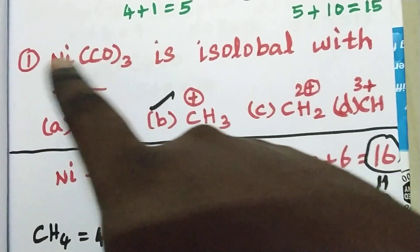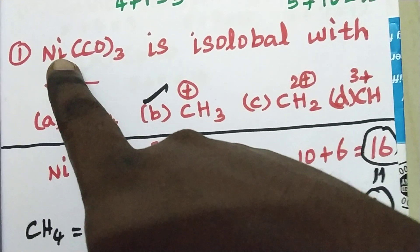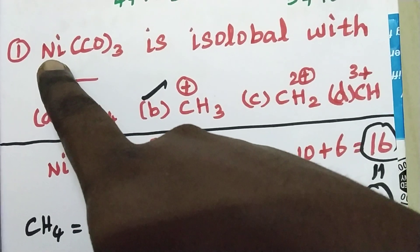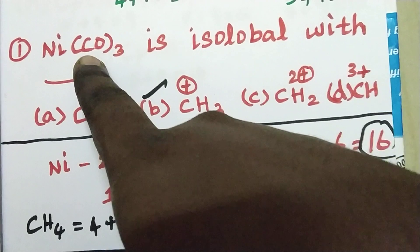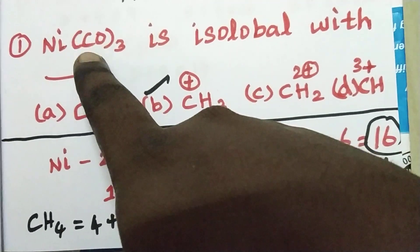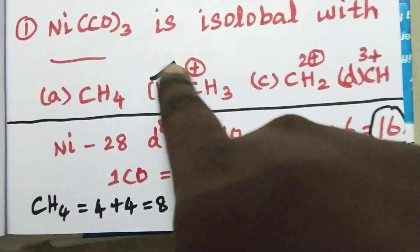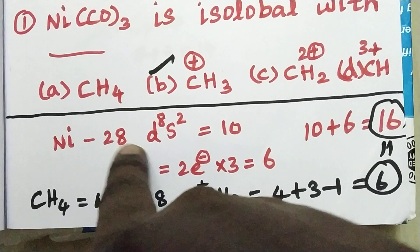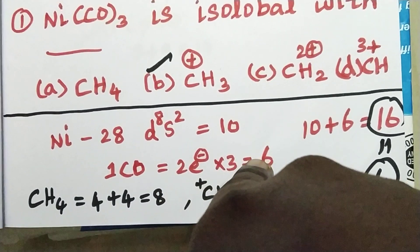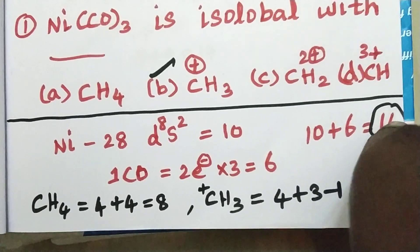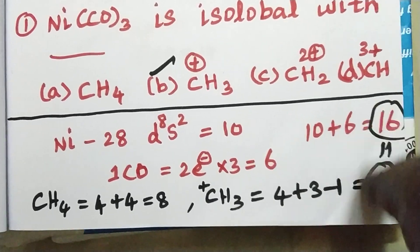Nickel has atomic number 28, configuration D8, 4S2, so nickel has 10 valence electrons. Each carbonyl ligand donates 2 electrons; 3 carbonyls give 6 electrons. So 10 plus 6 equals 16 electrons for the d-block species, meaning 16 electrons corresponds to 6 electrons isolobal. For CH3+: 4 plus 3 minus 1 equals 6. So both are isolobal.